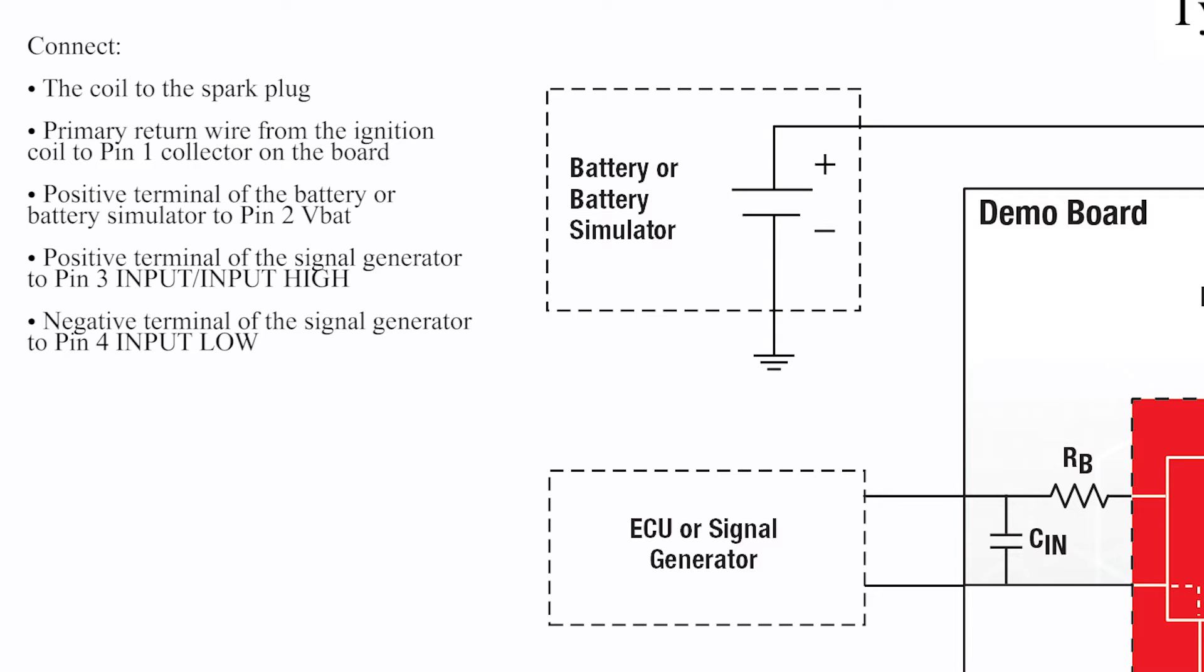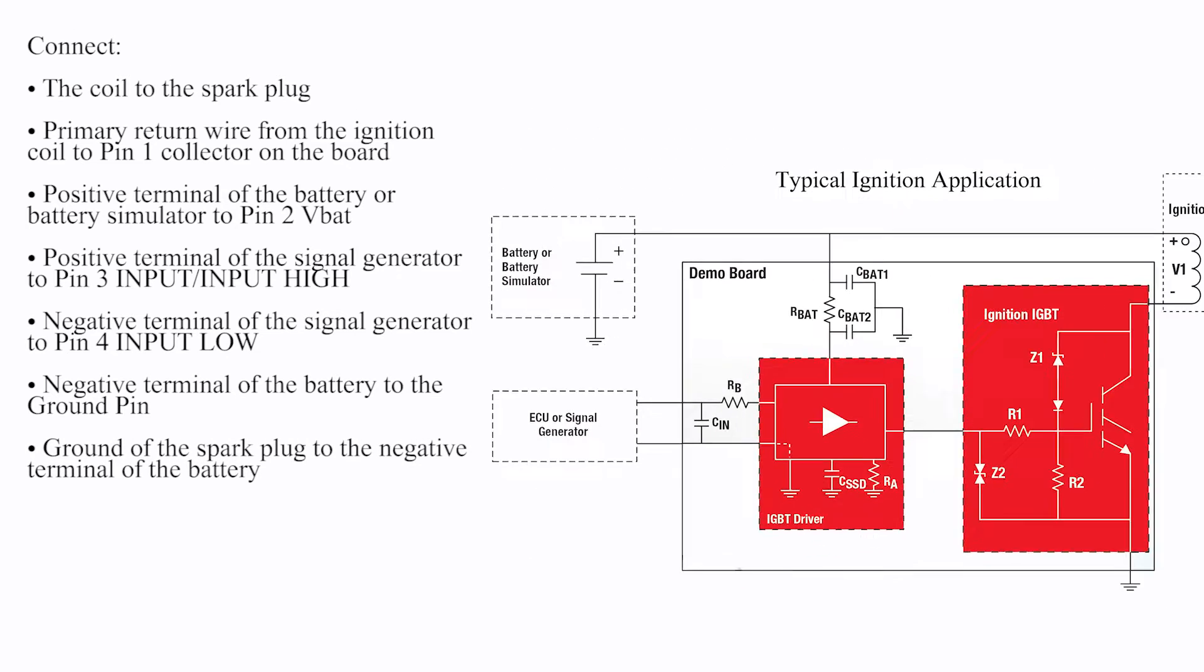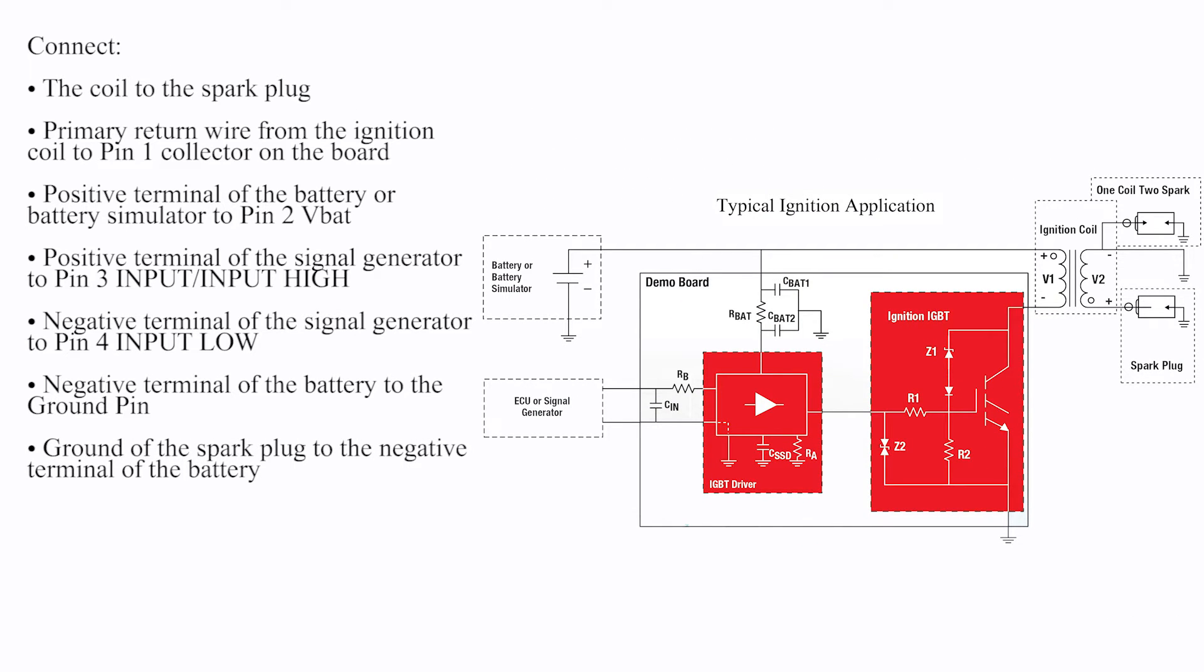Connect the negative terminal of the signal generator to Pin 4, Input Low. Connect the negative terminal of the battery to ground pin. Connect the ground of the spark plug to the negative terminal of the battery. Connect the primary power of the ignition coil to the positive terminal of the battery.